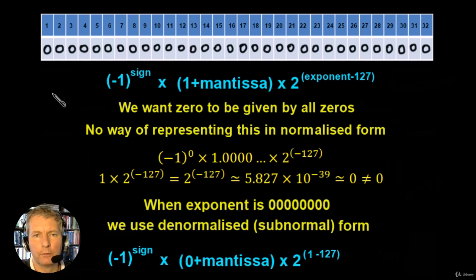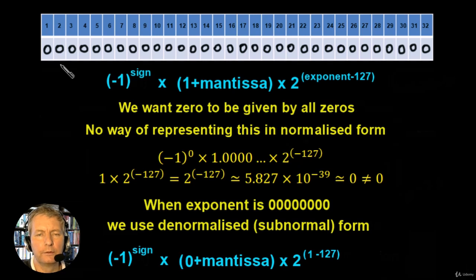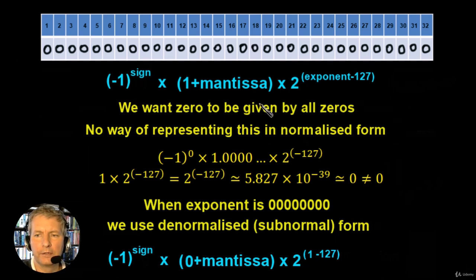We would like to represent the number 0 in floating point binary by 32 zeros, but we're not able to do that using the normalized form which we've seen in the previous video. So let's see why that is. This is a normalized equation. Now if we were looking at the sign bit, the sign bit is just the same — 0 will give us a value of minus 1 to the power of 0, which will just give us the value 1.